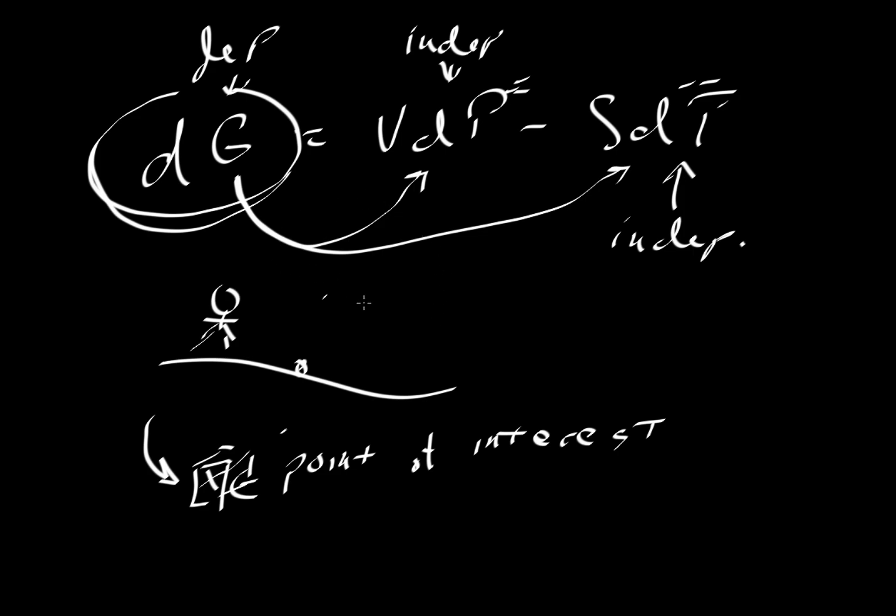So dG is related to dU, but it represents a different kind of energy. It's an energy that is minimized when we have constant pressure or constant temperature. Or another way to think about it, maybe the easiest way to think about it, is it goes to zero as we go to constant pressure and constant temperature.